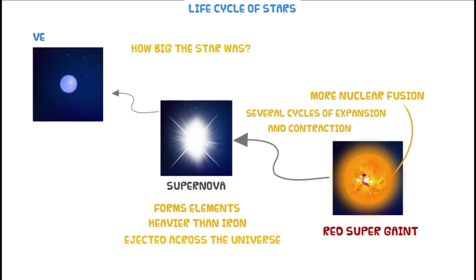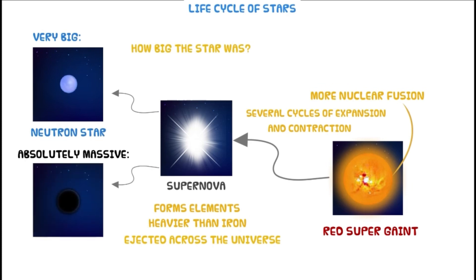Then, for example, if the star is very, very large in size, it will form a neutron star. But if the star is absolutely massive, the result is in the form of a black hole.